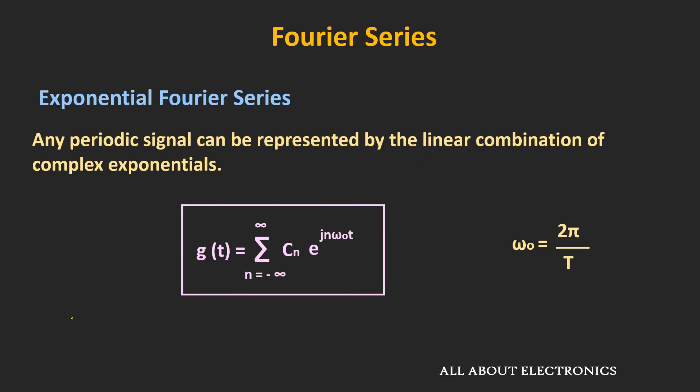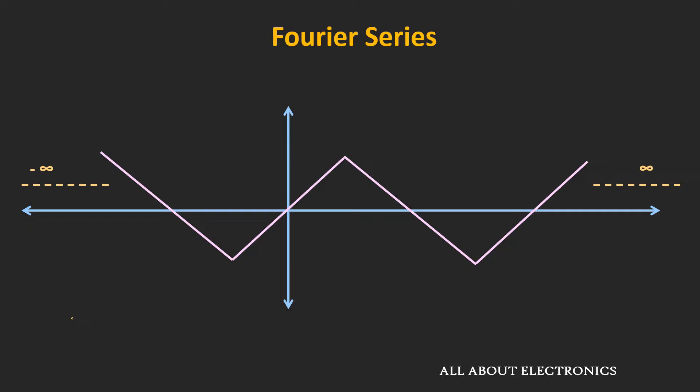So far in the earlier videos, we had seen that using the Fourier series, we can find the frequency spectra of any periodic signal. A periodic signal repeats itself after some finite time and exists from minus infinity to plus infinity. But all practical signals are aperiodic, because they start at some finite time and also end at a particular time. For example, a speech signal exists only for a finite duration — that means almost all practical signals are aperiodic.